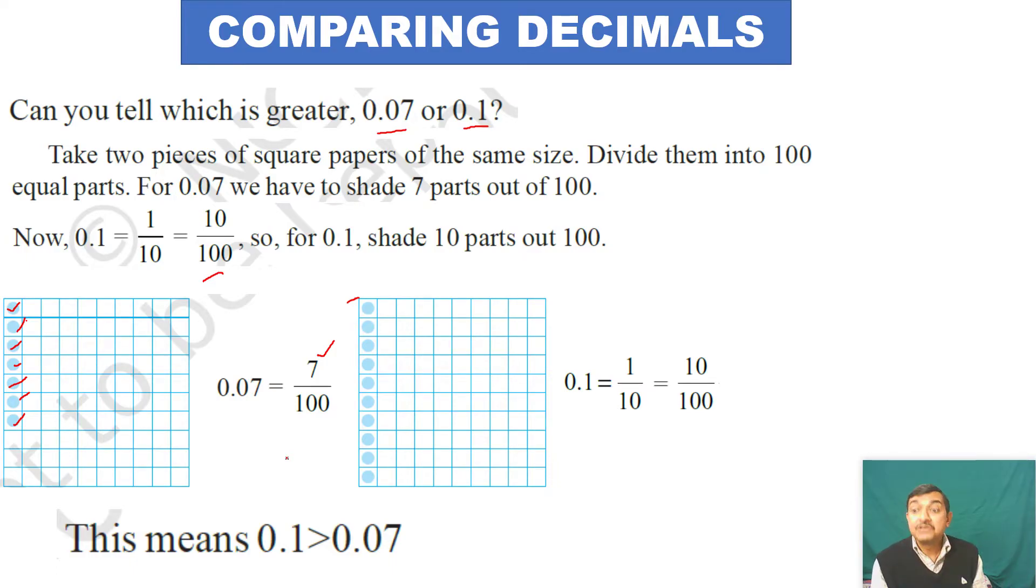Now for 0.1, in decimal form it will be 0.1, but in fraction form it will be 1 upon 10. When we multiply numerator and denominator by 10, it becomes 10 upon 100.